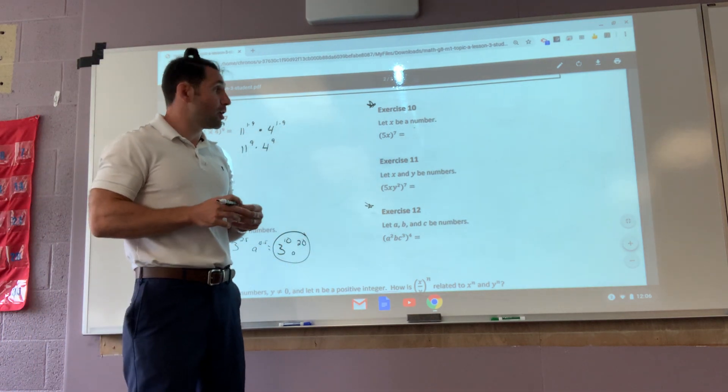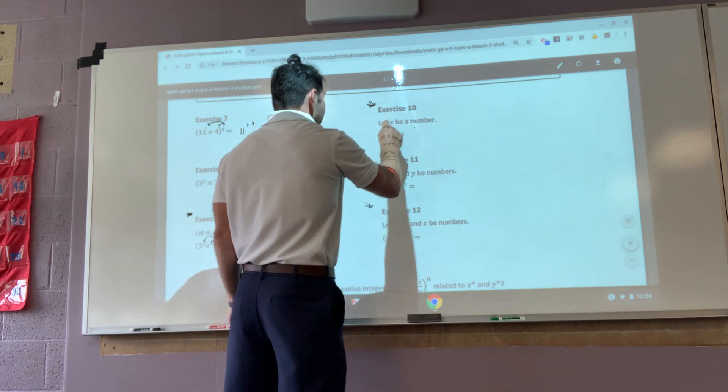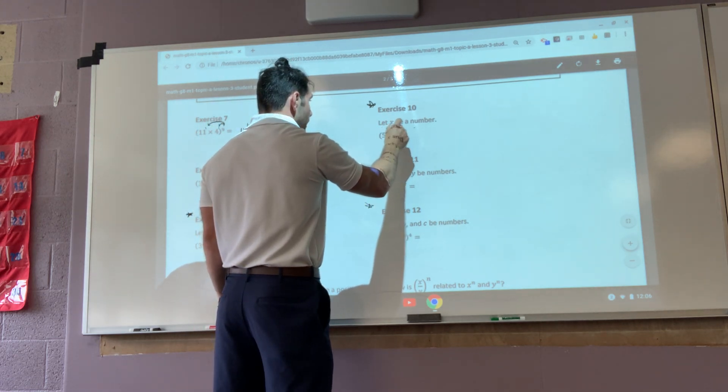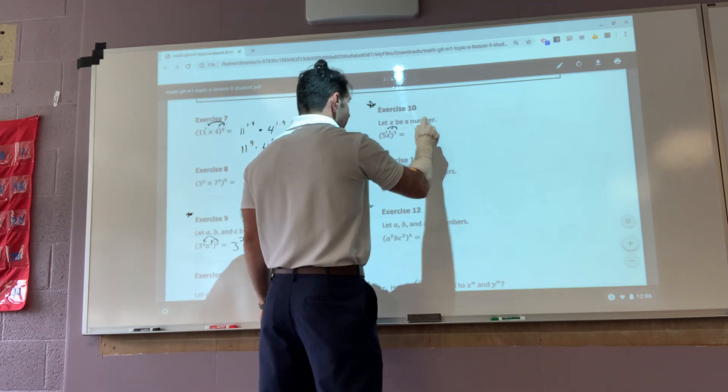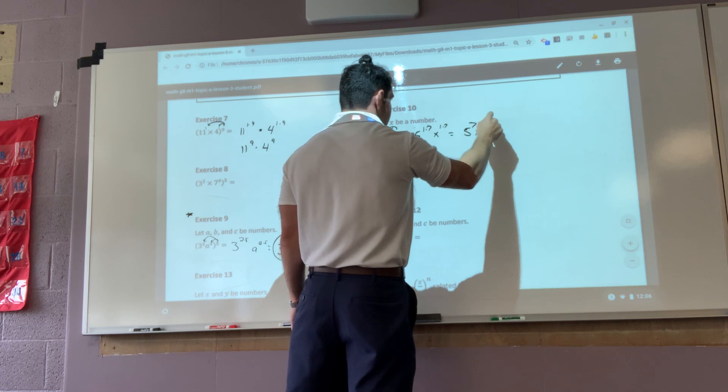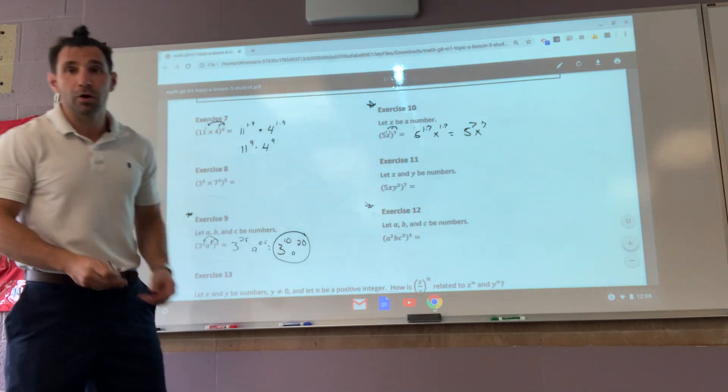This, on the other hand, we need to know, hey, five has an exponent, x has an exponent. So it's seven times the one, seven times the one. So that's five, one times seven, x, one times seven, which is five to the seventh, x to the seventh. Same thing holds true here.